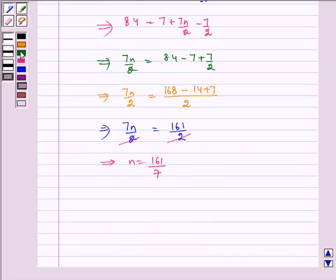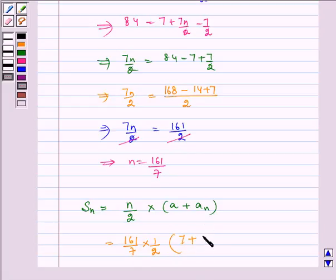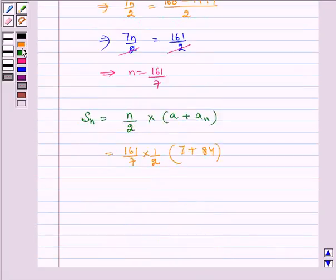Now using this value of n we will find the sum, which equals n/2 multiplied by (a + an). This equals 161/7 times 1/2 multiplied by, a is 7 and an is 84. Solving further, we get 161/14 multiplied by 91.